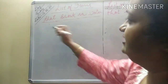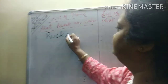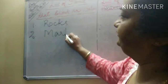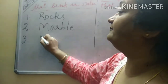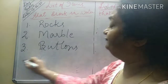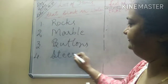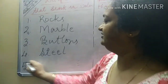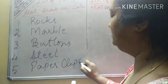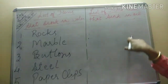My first material which will sink in water — let me take rock or rocks. Second, marble. Third, buttons. Fourth, steel — any item made up of steel. And the fifth one, paper clips.